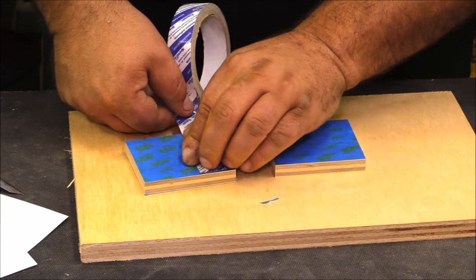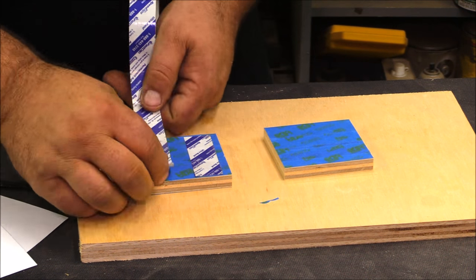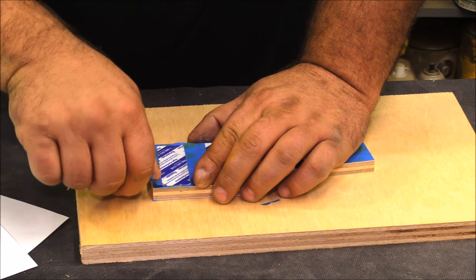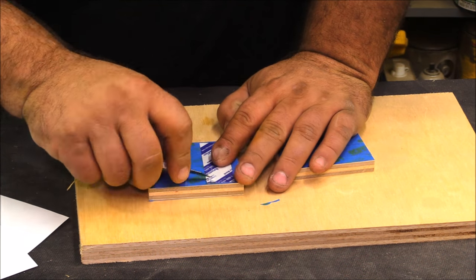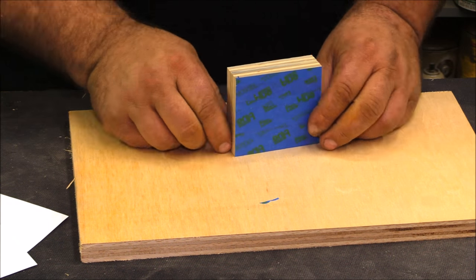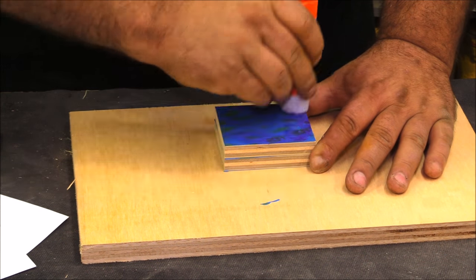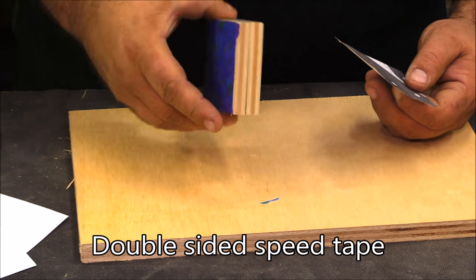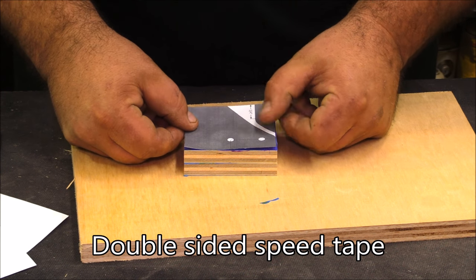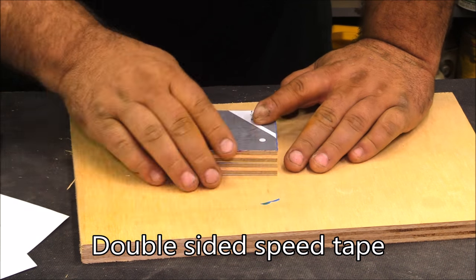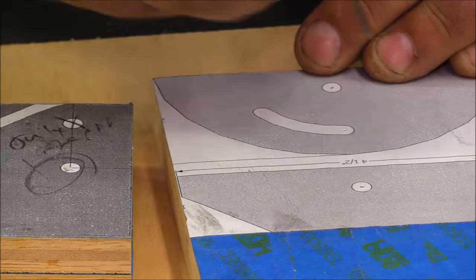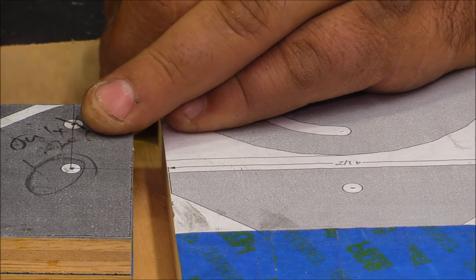You guys have seen me use the blue tape trick before for templates. Well, a subscriber turned me on to using blue tape between two pieces with double-stick tape. I used FastCap's FastEdge and that stuff is super strong. But with the blue tape it just comes off really easy.